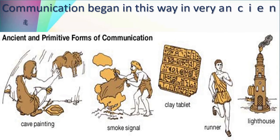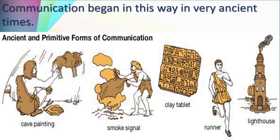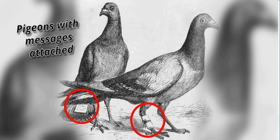Ancient and primitive forms of communication: communication began with cave paintings, then smoke signals — they used smoke to alert other people or give information. Then clay tablets in written form, then runners, and lighthouses — to warn about danger or big stones in waterways. Pigeons with messages attached were used — messages were transferred from one place to another by birds. We have heard about all this in stories.